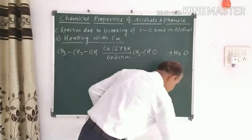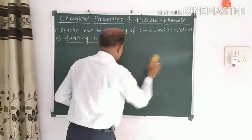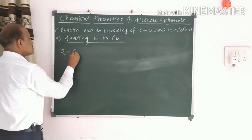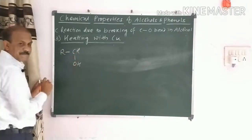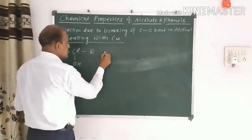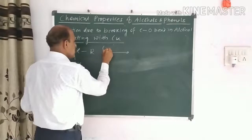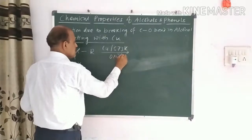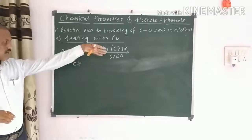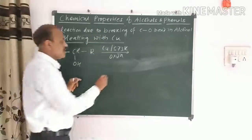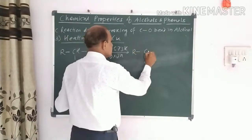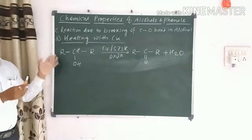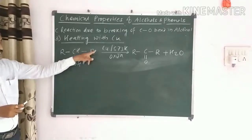For secondary alcohol: taking RCHOH–R as the secondary alcohol, when its vapors are passed over hot copper at 573 Kelvin, this is again equivalent to oxidation. H, H, and O go together as H2O, and a ketone is formed along with liberation of water. Taking CH3 as the alkyl groups, we get acetone.